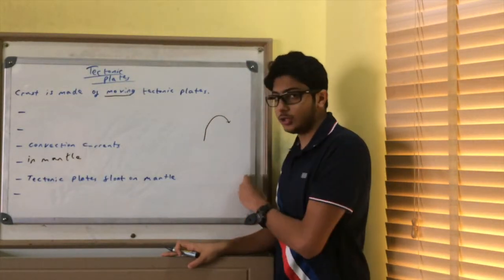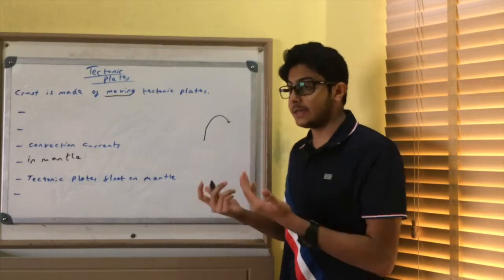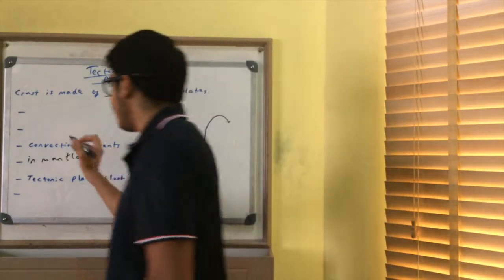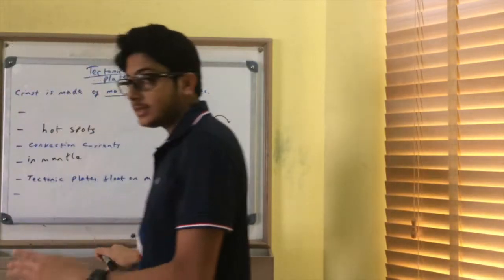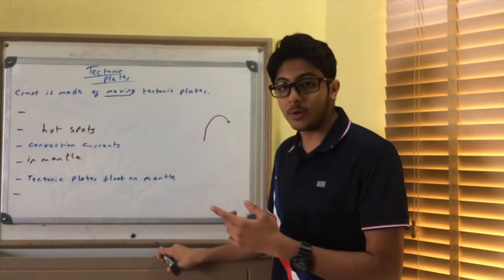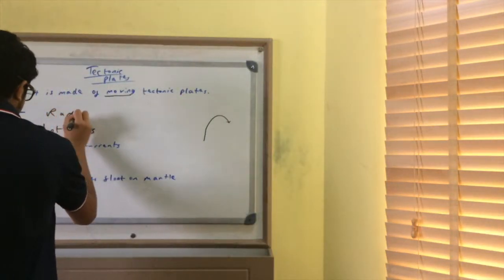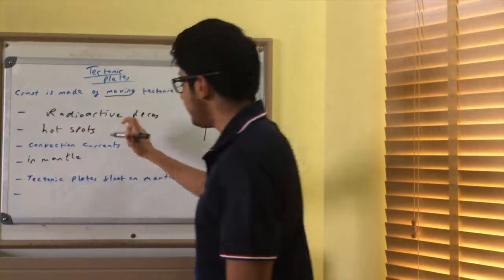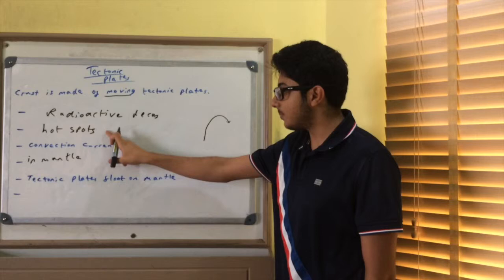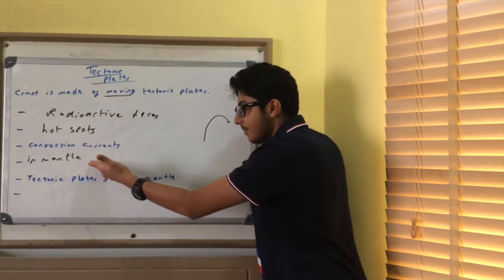Now what causes the convection currents? Obviously from physics, you should know that convection is caused by heat. And in this case, it's caused by hot spots. But what causes the hot spots? Radioactive decay. And you need to know this. Radioactive decay. So, radioactive decay causes hot spots, which creates convection currents in the mantle.